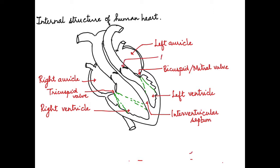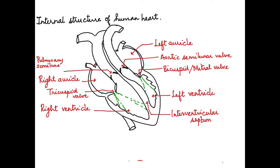Now we label the other valves — those present in the blood vessels that leave the heart. On the left side we have the aortic semilunar valve, which is in the aorta, and on the right side we have the pulmonary semilunar valve, present at the base from the ventricle to the blood vessel. These semilunar valves have three cusps shaped like a half moon, which is why they are called semilunar valves.